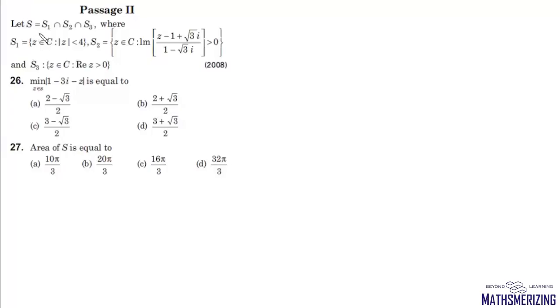The question asks: let S be the set which is the intersection of S1, S2, and S3, where S1 is the set of all points z such that |z| is less than 4. So S1 consists of all the points inside the circle with center at origin and radius equals 4.